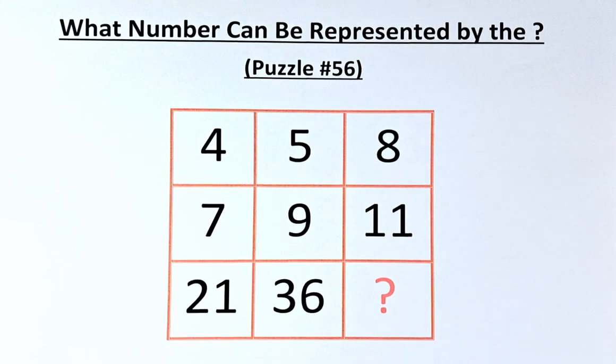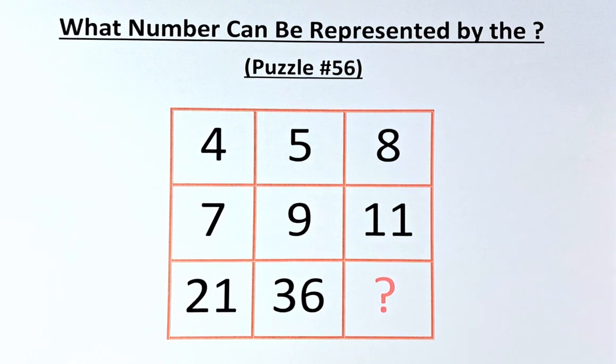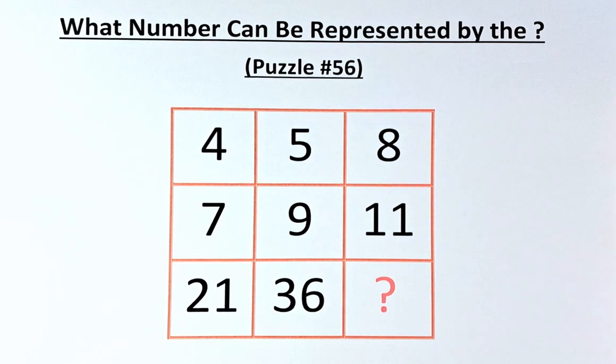Welcome back to the solution of puzzle number 56. What number can be represented by the question mark? The numbers in the puzzle are: in the first row, we have 4, 5, 8. Second row, 7, 9, 11. And in the final row, we have 21, 36, and the question mark.